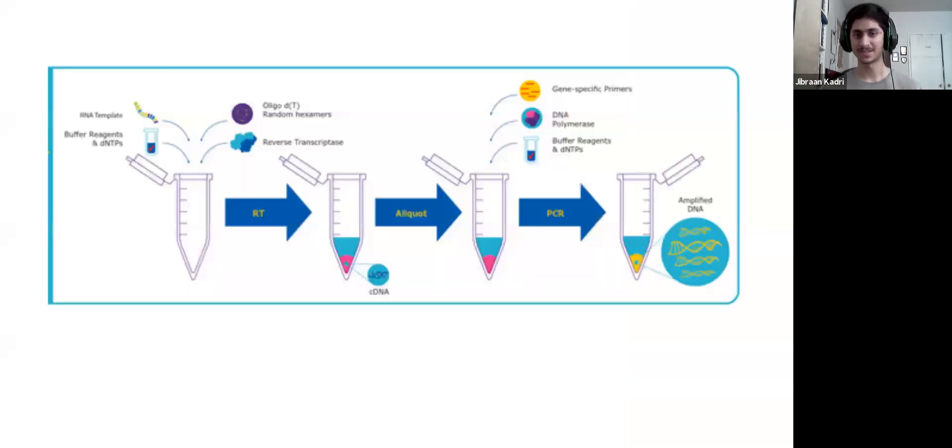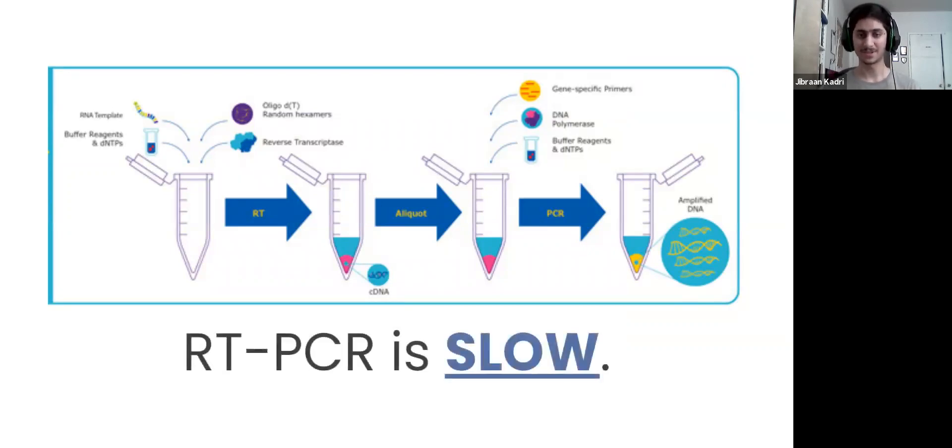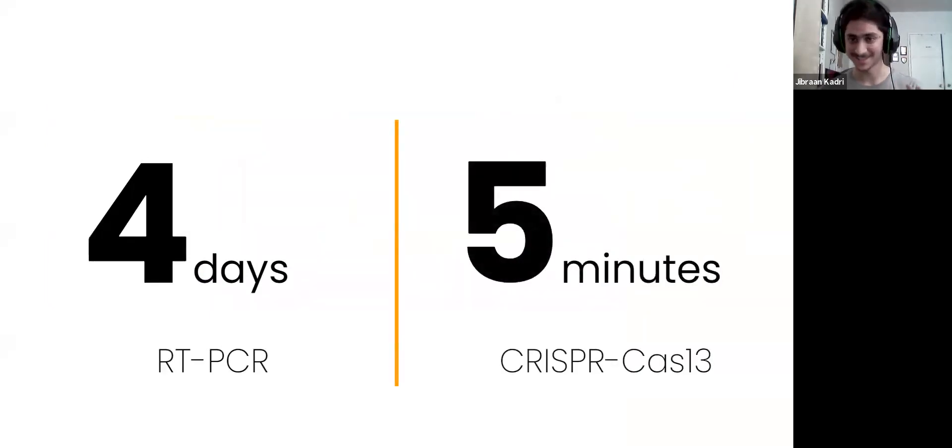So, current testing methods for COVID-19 involve something called RT-PCR. Now, RT-PCR is slow, and anyone that's done a COVID test knows what I'm talking about. It takes around four days to get a test done, and with CRISPR-based diagnostics, it takes a whopping, listen close, five minutes to get a test done. So, how does it work?